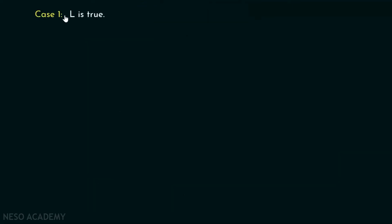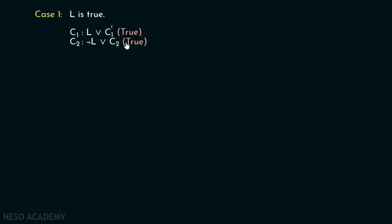Case 1 is when L is true. We have L or C̄1 in C1, and ¬L or C̄2 in C2, and they both must be true. Our target is to prove that if C1 and C2 are true, then C has to be true. Let's see what happens when L is true.